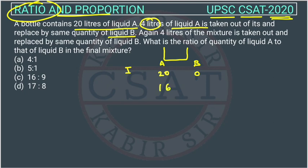And what is added and replaced by same quantity, like 4 liters of liquid B is added. So this will be 4. So initially is this, now this. Now again they are doing this is the case one.